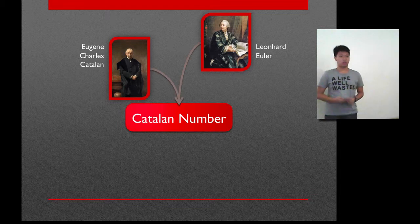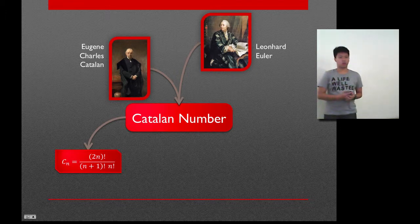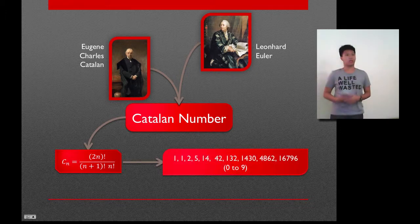The Catalan numbers have some main equations, which is this one. This one uses the factorials to calculate, and when tried on the 0th Catalan number to the 9th Catalan number, it results in this: 1, 1, 2, 5, 14, and so on.